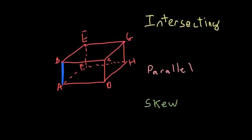All right, so we have a rectangular prism here ABCDEFGH, and we're going to go over intersecting, parallel, and skew. So everything is going to be based on that blue line there AB—that's always where we're going to start with.